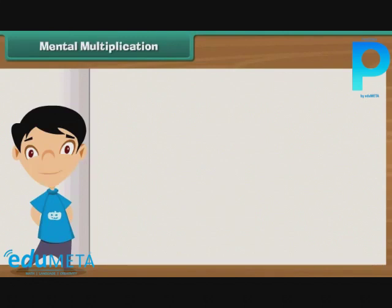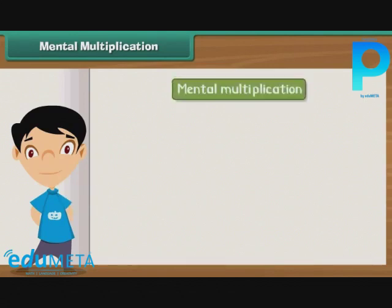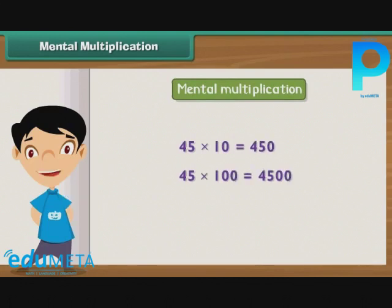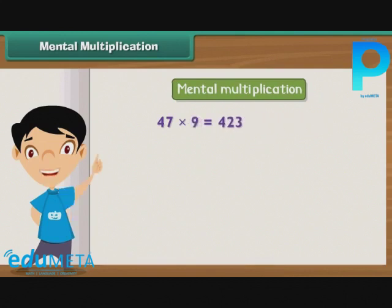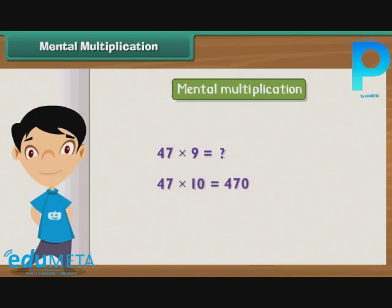Having learnt mental addition and subtraction, let us proceed to learn mental multiplication. To multiply a number by 10 or its multiples, add the same number of zeros to the result as in the multiplier. To multiply a number by 9, multiply it by 10 first and then subtract the number itself from the result. For example, to multiply 47 by 9, first multiply 47 by 10 to get 470.